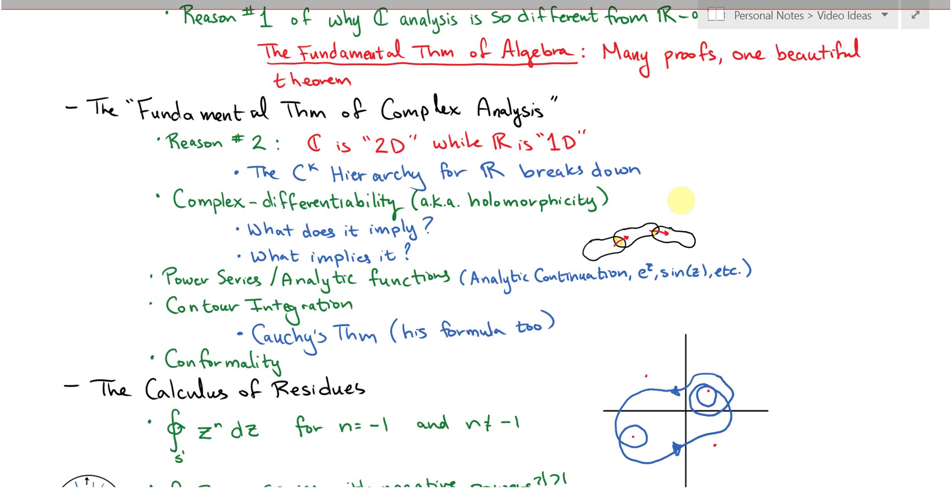And you learn what the word holomorphic is and all of the different properties of holomorphicity. And the unifying theme here is that there's this kind of single fundamental theorem of complex analysis I'm going to talk about, where basically you have complex differentiability and you have a million different properties besides it that are all equivalent to it.